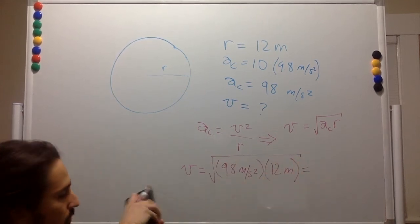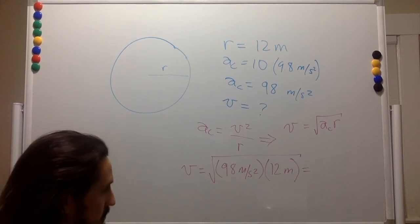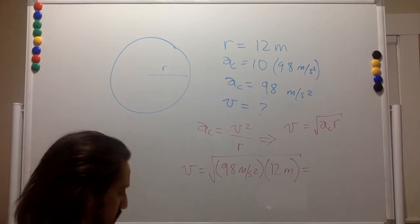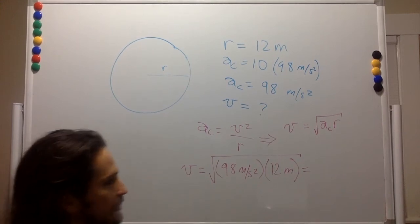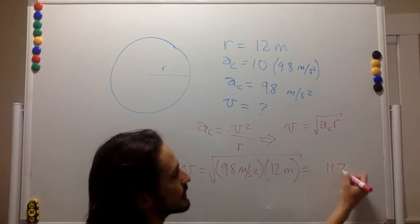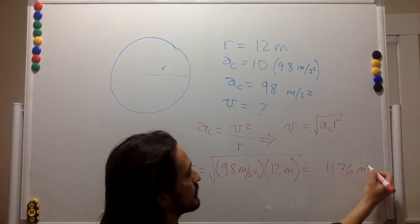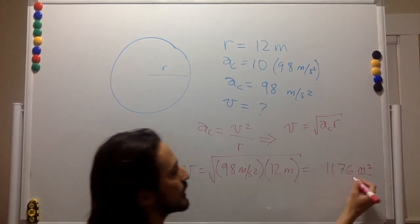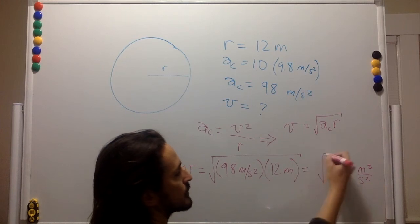So that is square root of 98 times 12, which is 1176 meters squared per second squared. The square root of that is 34.3 meters per second.